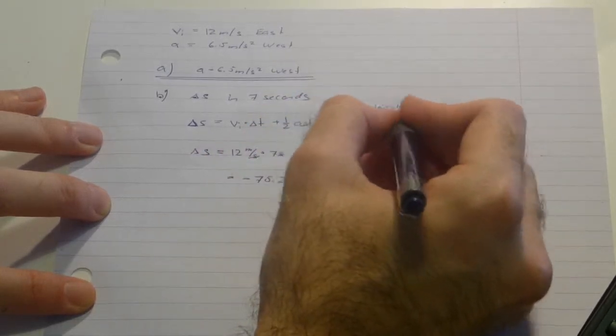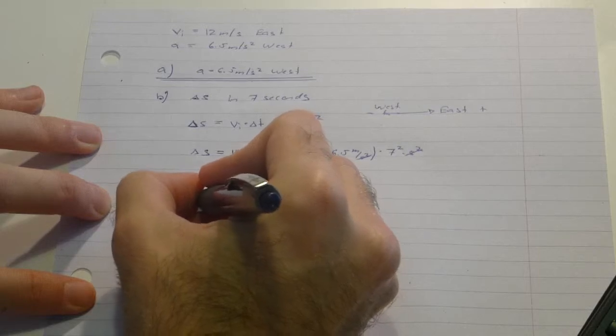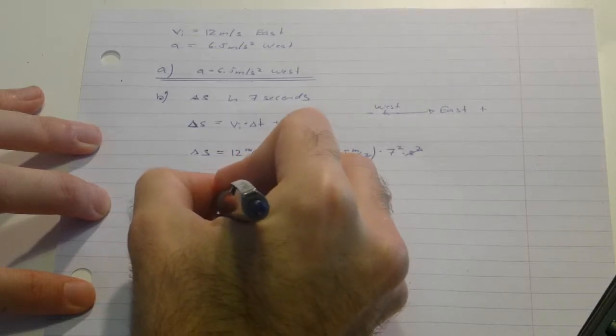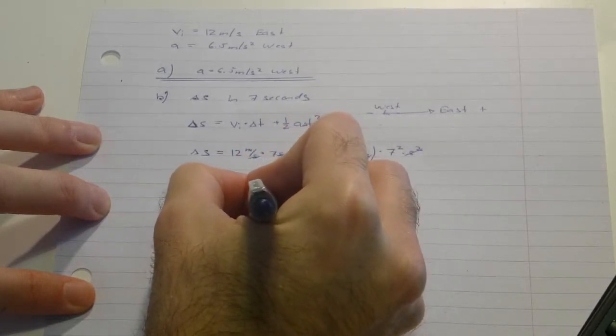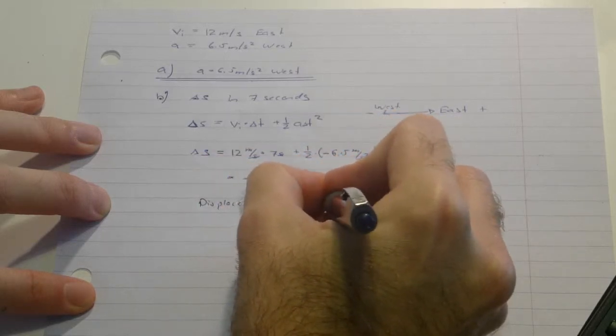As I said that west is negative, this means that my board ends up having a displacement of 75.25 meters west.